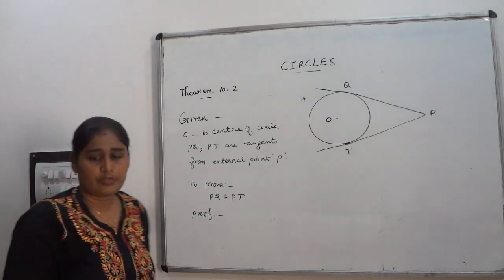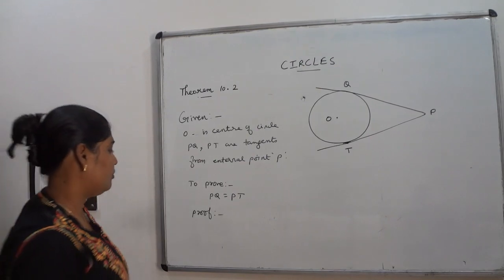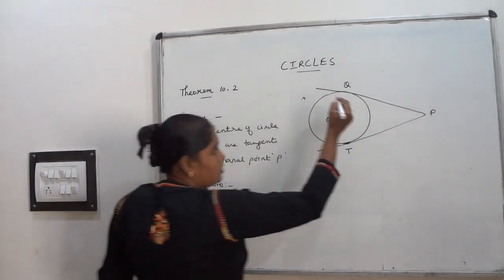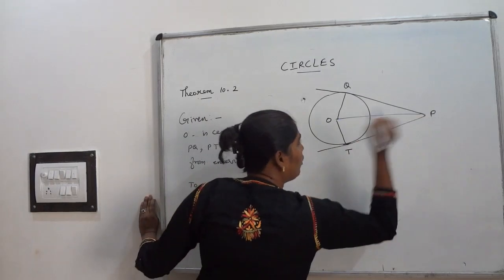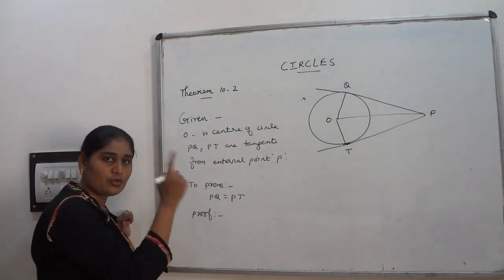How you are going to prove this statement? For proof, join OQ, OT and OP. So that I will get two triangles.